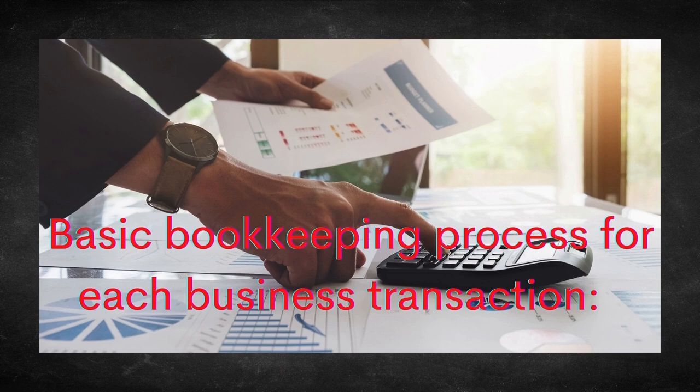To determine the correct account category for assets, liabilities, net worth, revenue, and expense, you must identify the correct line item account. Examples include salaries and wages, employee share, sick leave expense, annual leave expense, etc. Ensure the correct amount is used when recording or posting the transaction — be consistent and accurate.